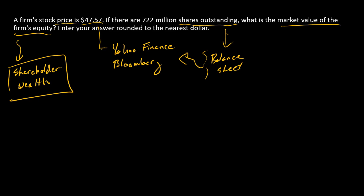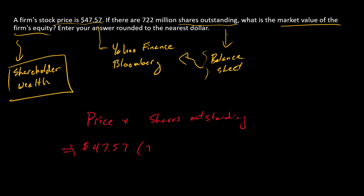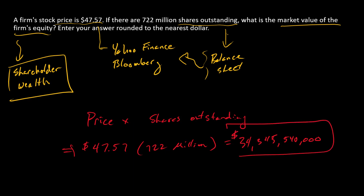The calculation here is simply the firm's stock price times shares outstanding. So here we can calculate the market value of a firm's equity by multiplying $47.57 by 722 million shares. That gives us $34 billion — billion with a B — $345,540,000. And there's our answer: the market value of the firm's equity, or shareholder wealth.